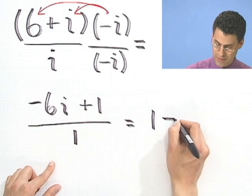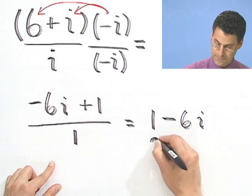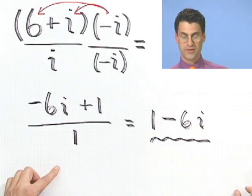So in fact, this just turns out to be 1 minus 6i. So that one was not too bad to compute. Let's try one last one together.